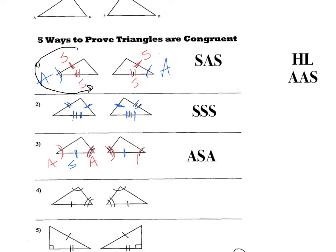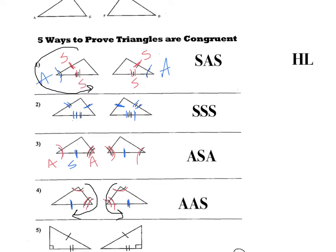In the next one, number four, if you look carefully, we have an angle, then another angle, and the last piece is a side. You must go in order — in this case clockwise, or counterclockwise — and you would have angle, angle, side. So I'm going to choose AAS.